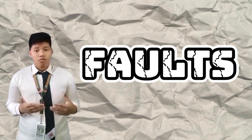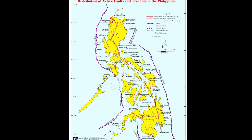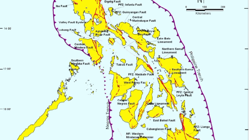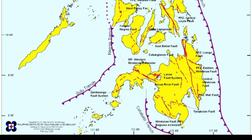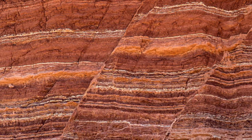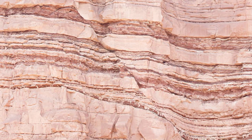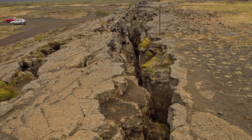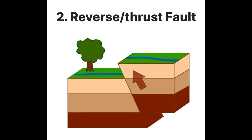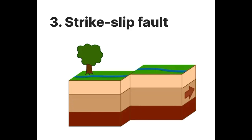Now let's proceed to our first geological map feature: faults. Faults are represented on geological maps by lines indicating the location of fractures in the Earth's crust. They show where one rock mass has shifted relative to another and can have significant implications for the distribution of resources and the potential for seismic activity. Faults can be classified based on direction of movement or forces acting upon them: normal faults caused by extensional stress, reverse faults caused by compressional stress, and strike-slip faults caused by shear stress.